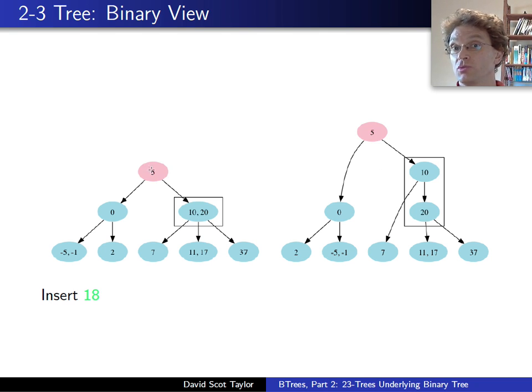Well, from my 2-3 tree view, I go, 18 is bigger than 5, move to the right child. Well, the same thing happens in the binary view. Then I go, well, 18 is bigger than 10, 18 is bigger than 10 over here too. 18 is less than 20. Those are two comparisons that take place within the 2-3 tree view of things, two comparisons in one node.